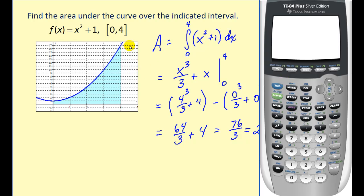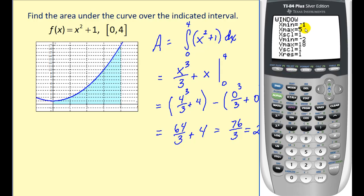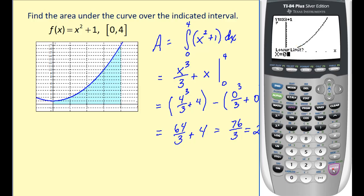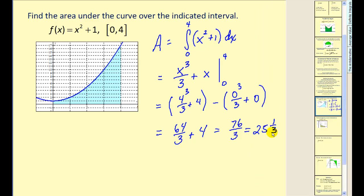We can check our work on the graphing calculator for definite integrals by entering the integrand into Y1. Hitting second trace brings up the calculation menu; selecting option seven asks for the lower limit of integration — zero — then the upper limit — four. The calculator shades the region and gives a decimal approximation of 25.3 repeating, which is of course 25 and one third, verifying our work.